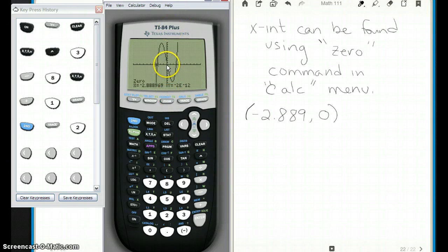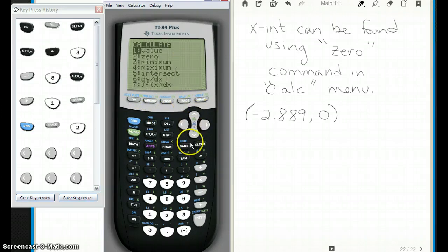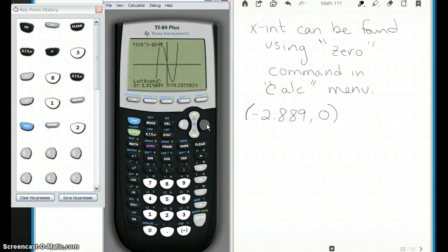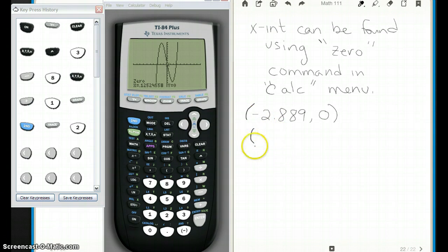All right. Let's go ahead and do the next one. Do we have to even look really too much at this one? Maybe? Let's see. Well, let's try. Second calc, zero, go down to two. Let's go to the left side. Enter. And to the right side, enter. And guess. Just try to get close. Ah, okay. So there's that one at negative point. Nope, not negative. Just point. One, two, five, comma, zero.